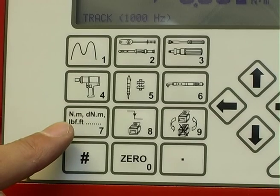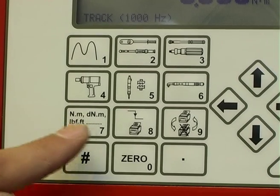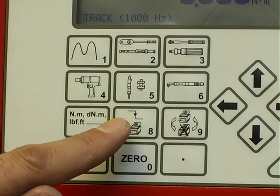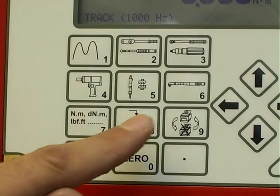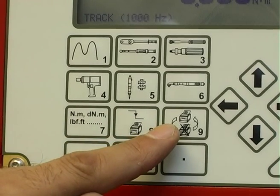7. Unit of measurement selection, 8. Memory reset and send result via the RS232 output, 9. Print inhibit.